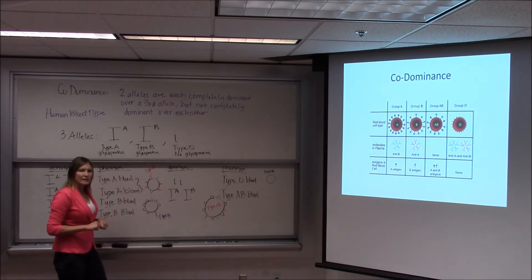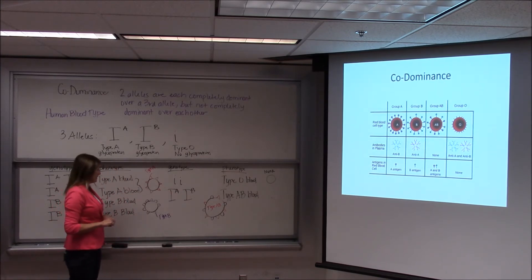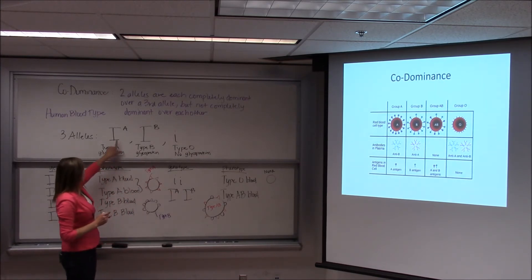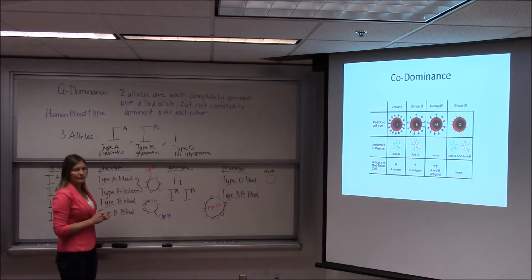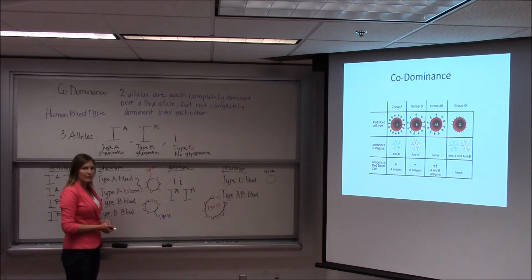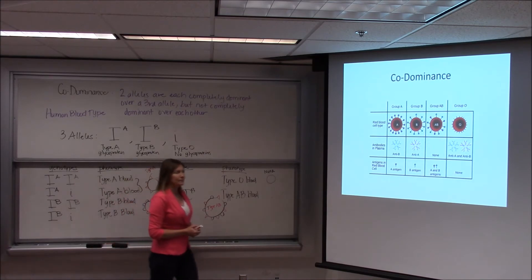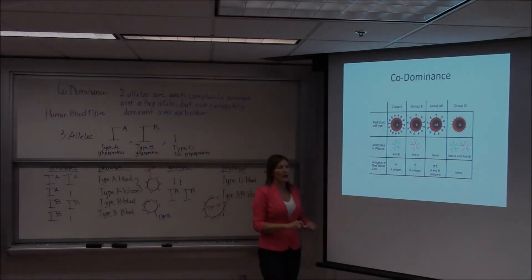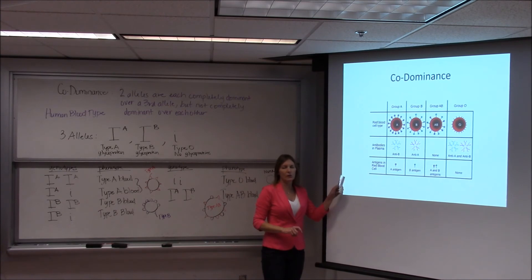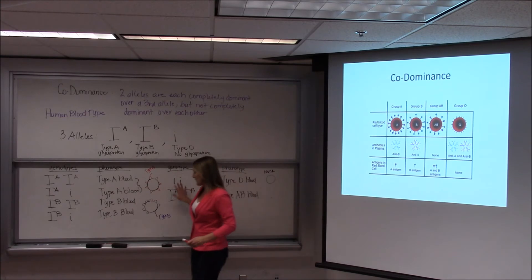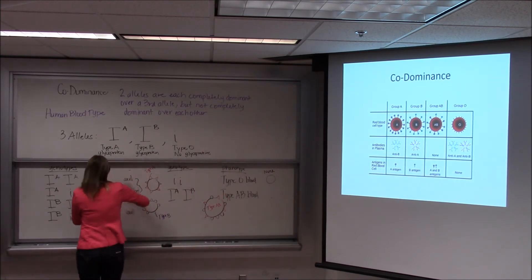In looking at patterns of inheritance for this, we need to use these alleles for doing our cross. I want to do a couple of sample crosses for human blood type, and then talk for a minute about who can donate to whom and who can receive from whom — because that's what's happening on this chart on the screen. I'm going to refer back to this chart when we talk about that, but I'm going to erase it for now so we have room for our crosses.